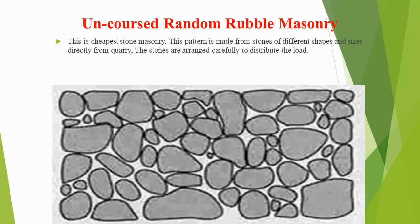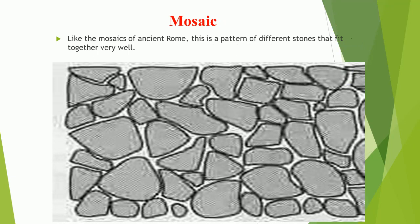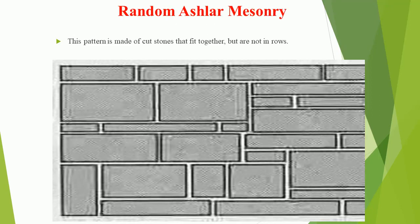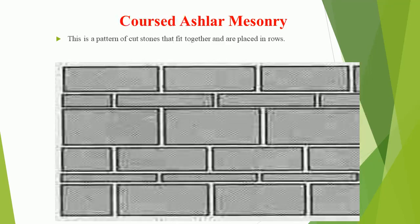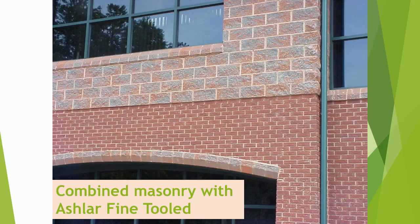Uncoursed random rubble masonry — this is the cheapest stone masonry. The pattern is made from stones of different shapes and sizes directly from the quarry; the stones are arranged carefully to distribute the load. Mosaic masonry — like the mosaics of ancient Rome, this is a pattern of different stones that fit together very well. Random ashlar masonry — this pattern is made of cut stones that fit together but are not arranged in rows. Combined masonry with ashlar fine tooled.